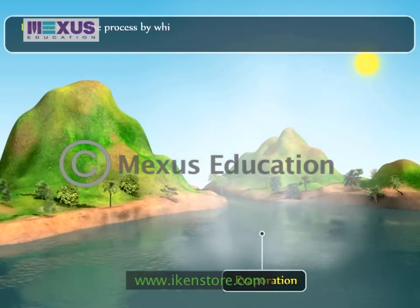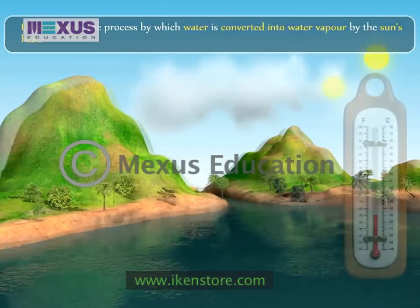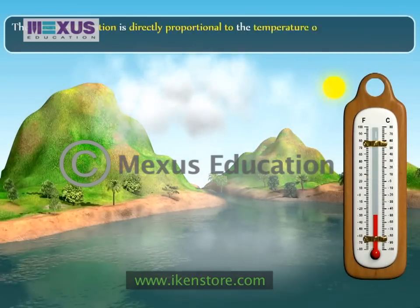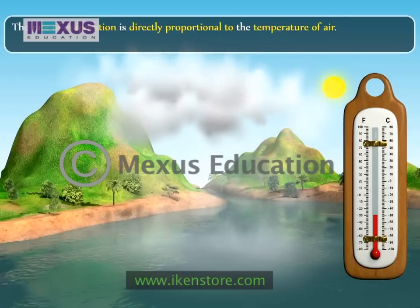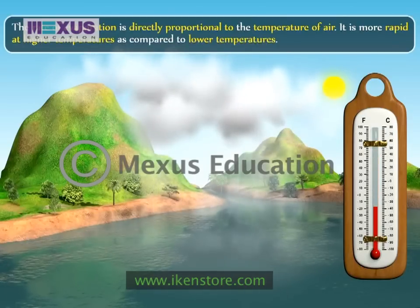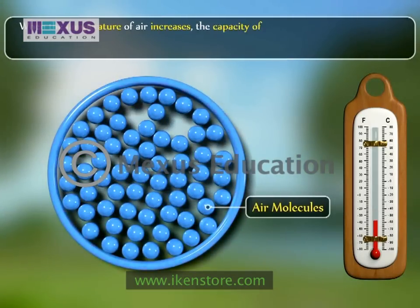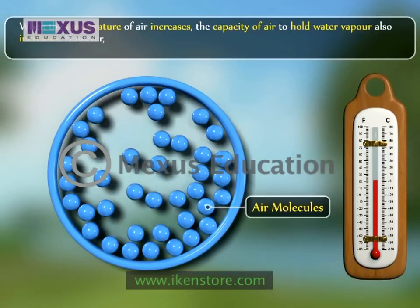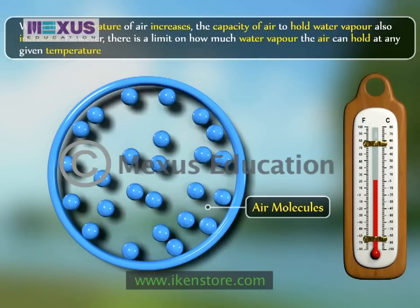Evaporation is the process by which water is converted into water vapor by the sun's heat. The rate of evaporation is directly proportional to the temperature of air. Evaporation occurs at all temperatures; however, it is more rapid at higher temperatures compared to lower temperatures. When the temperature of air increases, the capacity of air to hold water vapor also increases. However, there is a limit on how much water vapor the air can hold at any given temperature.